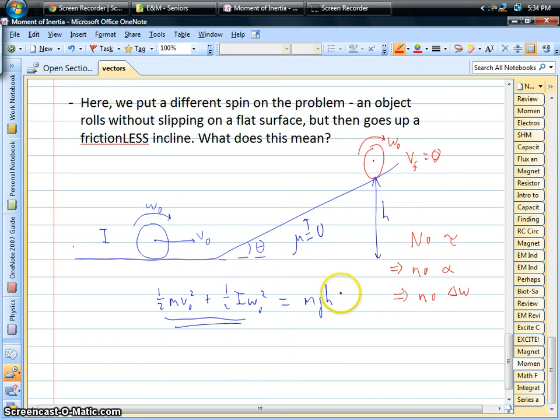So in terms of energy, there's one term we have to add on to the final state right here. And that's the rotational kinetic energy. Now that's exactly the same, since there's no change in the rotation, that's the same as what you had at the bottom of the hill.